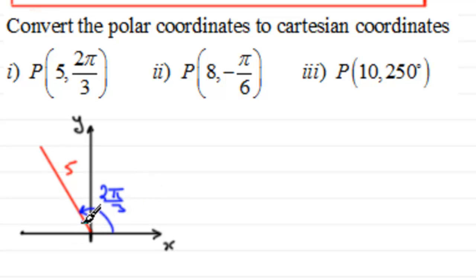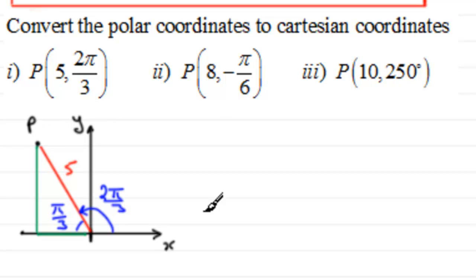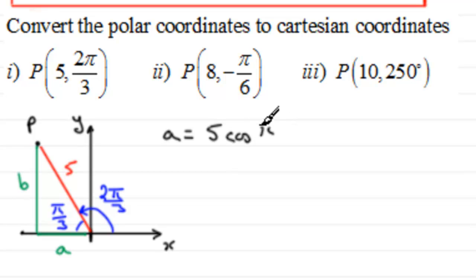That means the acute angle in the triangle will be π/3 radians. I need to work out the lengths of the two sides of the triangle. Let's label them a and b. By trigonometry, a is going to be equal to 5 times the cosine of π/3 radians. The cosine of π/3 is a half — it's a standard result — so that gives you 5 times a half, which is 5/2.